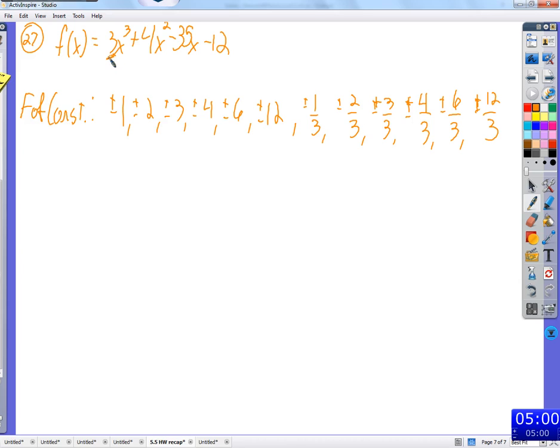So if the leading coefficient was 6, we would have to do over, these are all over 1. Then we'd have to do over 2, over 3, and over 6. Let me show you why. Now think about when we come down and we figure out that something was a zero. It was because we took one of the factors and set it equal to zero.